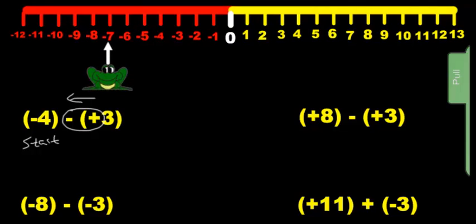He's going to land there. So our answer is going to be negative 7. Put it in brackets because these other two numbers are in brackets — that's the rule. If they're in brackets, the answer's in brackets.